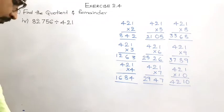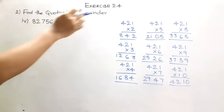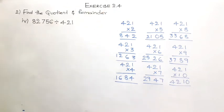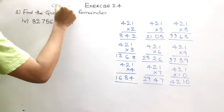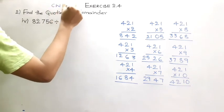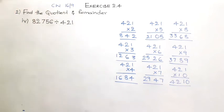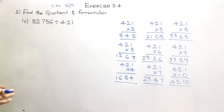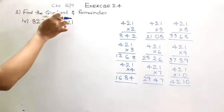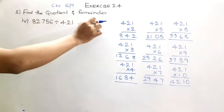Good morning children. Today we are going to continue our second Roman of Exercise 2.4, which is going to be your classwork for today. As I have been informing you, please copy the table also, because without the table the division won't look correct. We have to find the quotient and remainder of the given division.